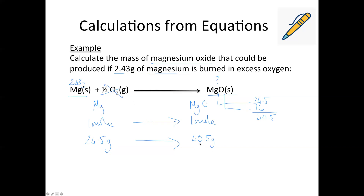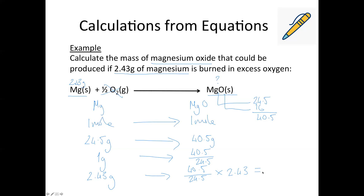So if we react 24.5 grams of magnesium in excess oxygen, we'd produce 40.5 grams of magnesium oxide. But we don't have 24.5 grams — we have 2.43 grams. So we scale down to find what one gram would produce: that's 40.5 divided by 24.5. Then we multiply up to the mass we actually have: 40.5 ÷ 24.5 × 2.43. Putting that into the calculator gives 4.02 grams. So burning 2.43 grams of magnesium in excess oxygen produces 4.02 grams of magnesium oxide.